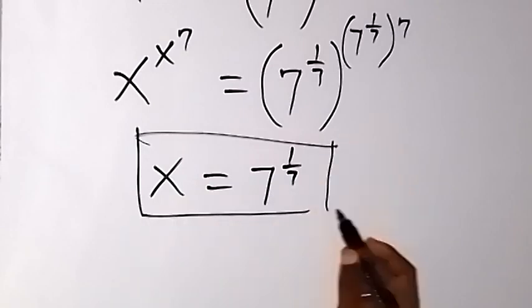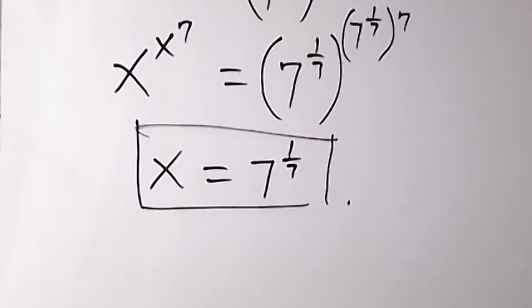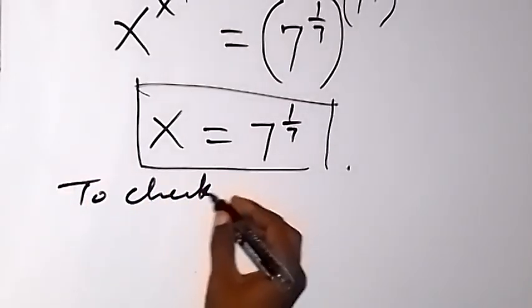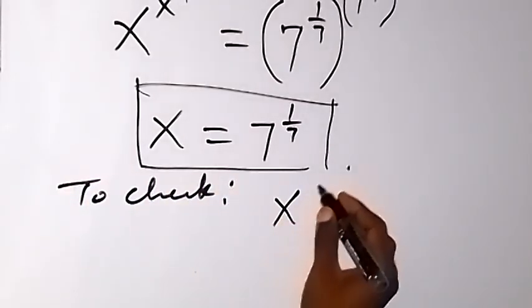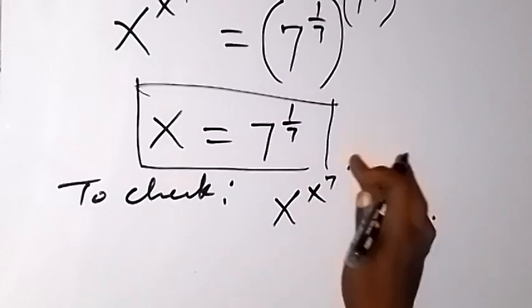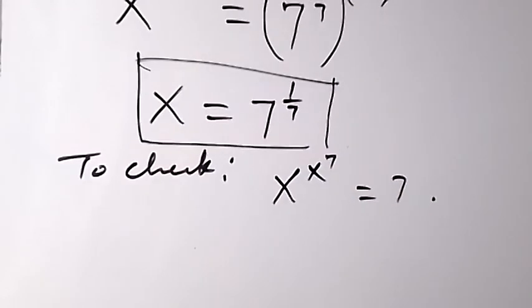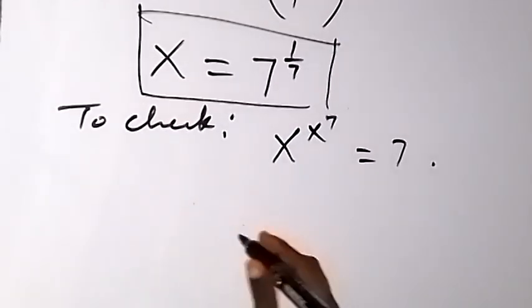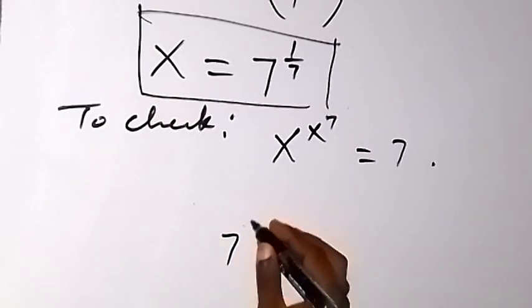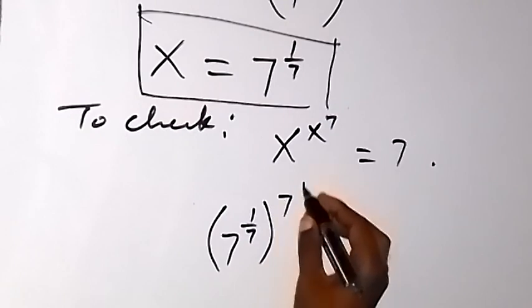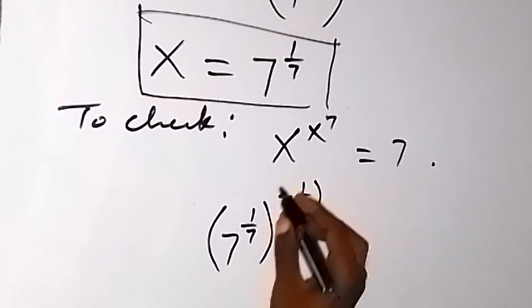So here we have the value of x. To check, we go back to what we were given: x raised to power x, raised to power 7, equals 7. Our x is 7 raised to power 1 over 7, so we substitute: 7 raised to power 1 over 7, that's x, raised to power x which is 7 raised to power 1 over 7, then raised to power 7.